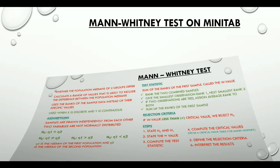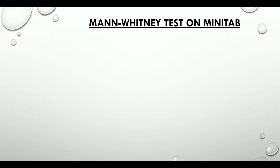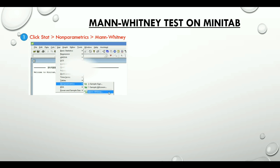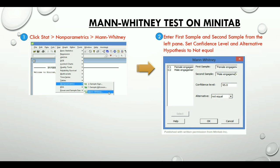Now let's quickly see how we conduct the Mann-Whitney test on Minitab. We click Stat, Non-Parametrics and Mann-Whitney. We then enter the first sample and second sample from the left pane and then set the confidence level and alternative hypothesis to not equal. Minitab normally does the test at 95% level of confidence. If we wish to change this percentage, we can change it in the confidence level box.